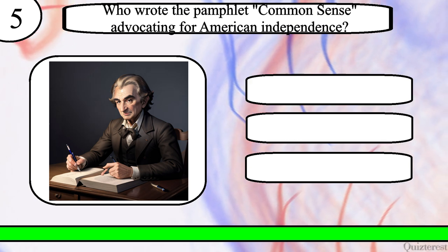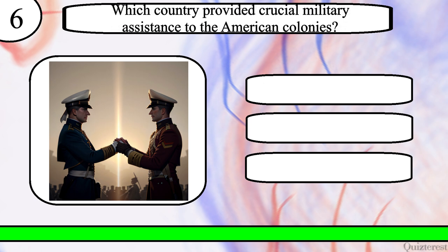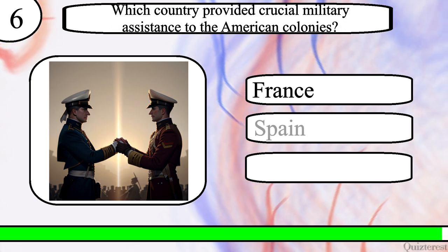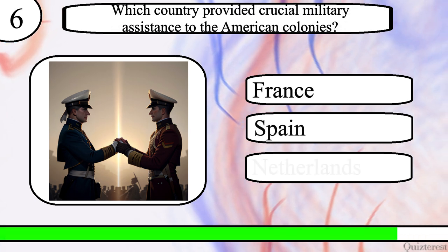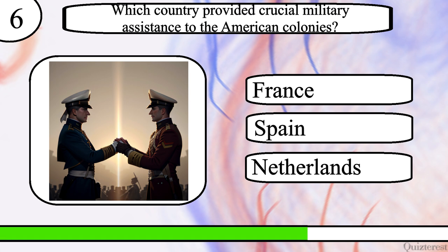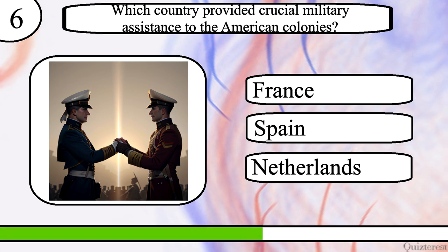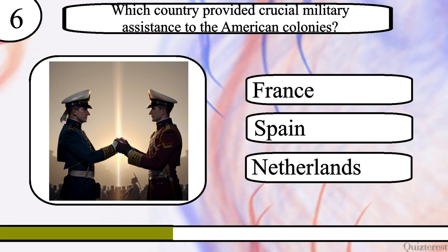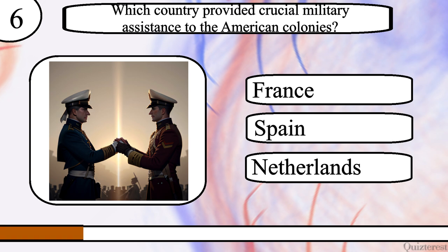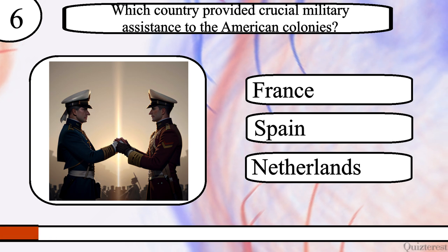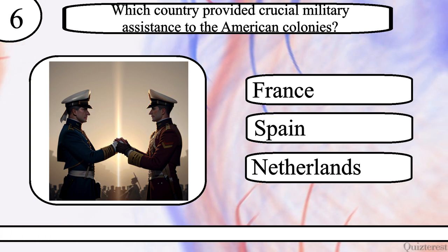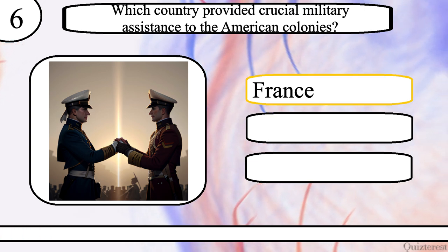Question 6. Which country provided crucial military assistance to the American colonies? France, Spain, or Netherlands? The correct answer is France.